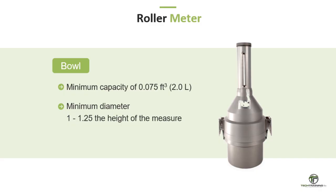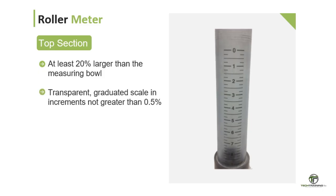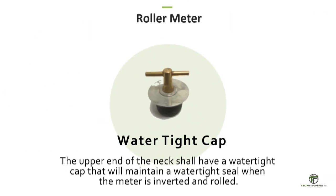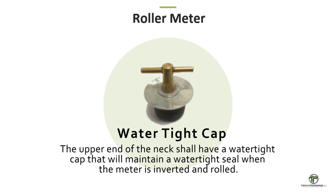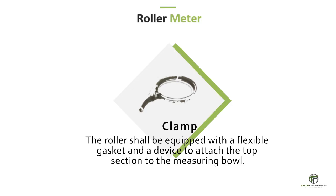The roller meter itself. The measuring bowl shall not have a capacity of less than 0.075 cubic feet or 2.0 liters, with a diameter equal to 1 to 1.25 times the height and be constructed with a flange at or near the top surface. The top section shall have a capacity at least 20% larger than the measuring bowl, equipped with a transparent scale graduated in increments not greater than 0.5%, from 0 at the top to 9% or more of the volume of the measuring bowl. Graduations shall be accurate to 0.1% by volume. The upper end of the neck shall have a watertight cap, and the roller meter shall be equipped with a flexible gasket and a device to attach the top section to the measuring bowl.